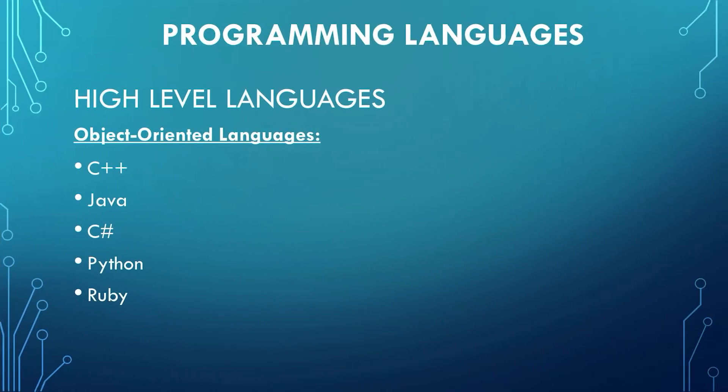Here are some examples of high-level languages. Some of you might have heard their names. We have C++, Java, C Sharp, Python, and Ruby.